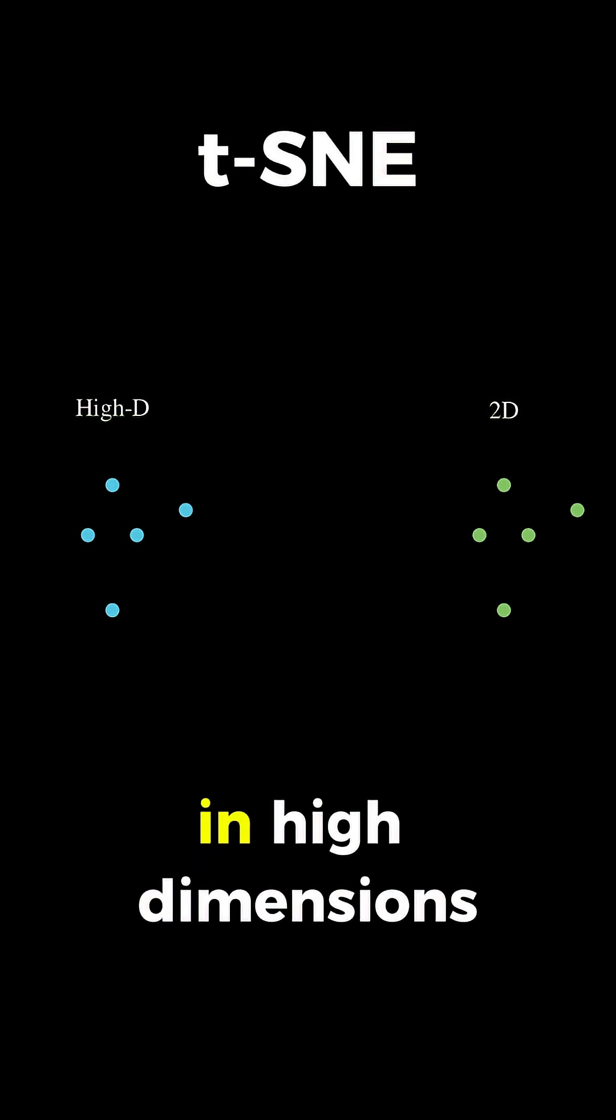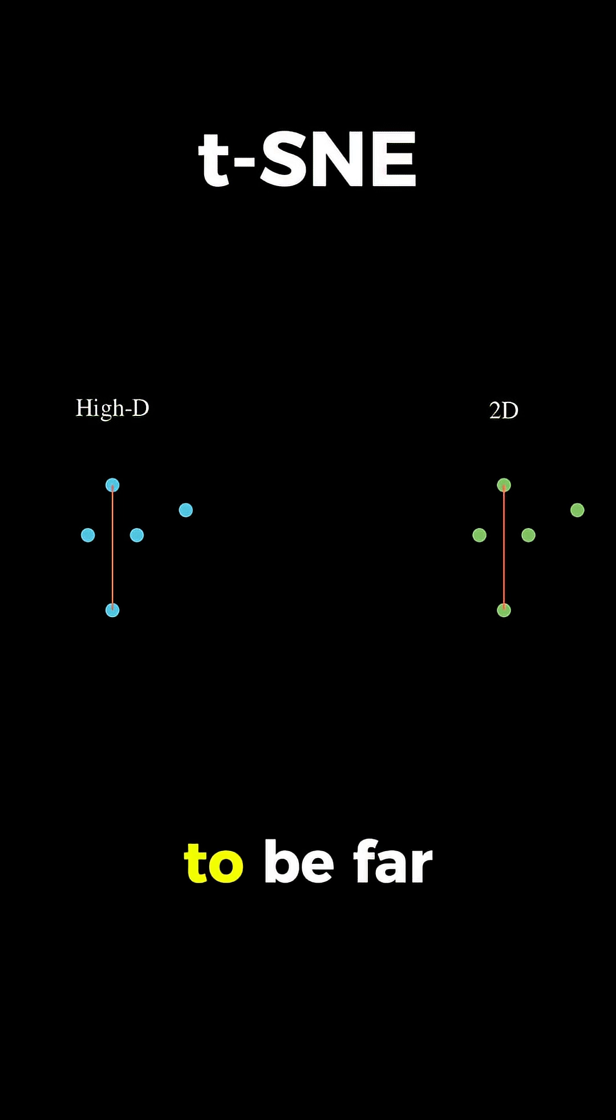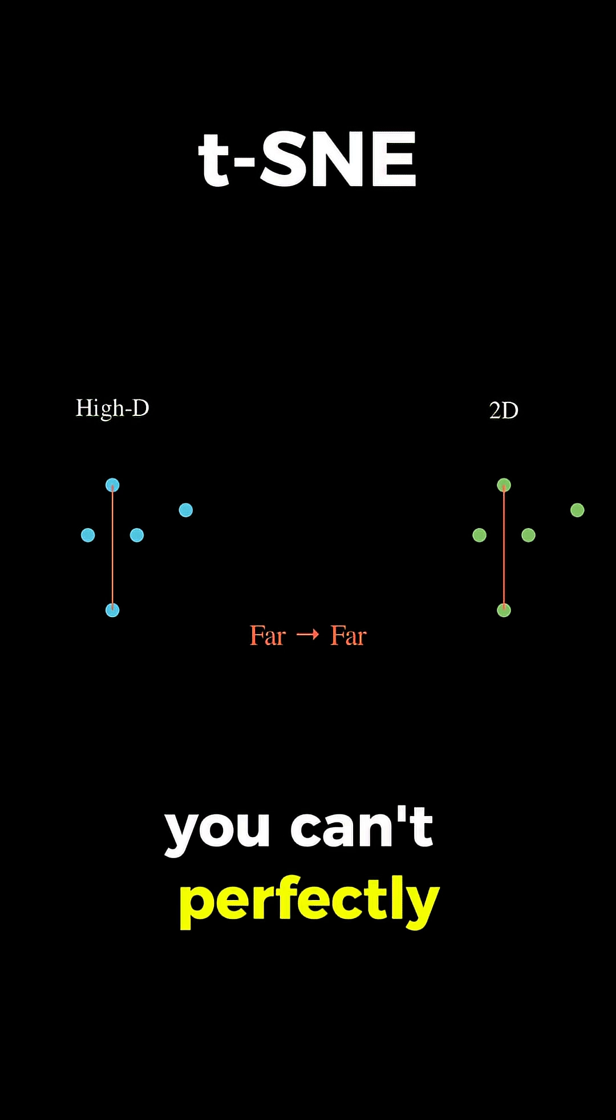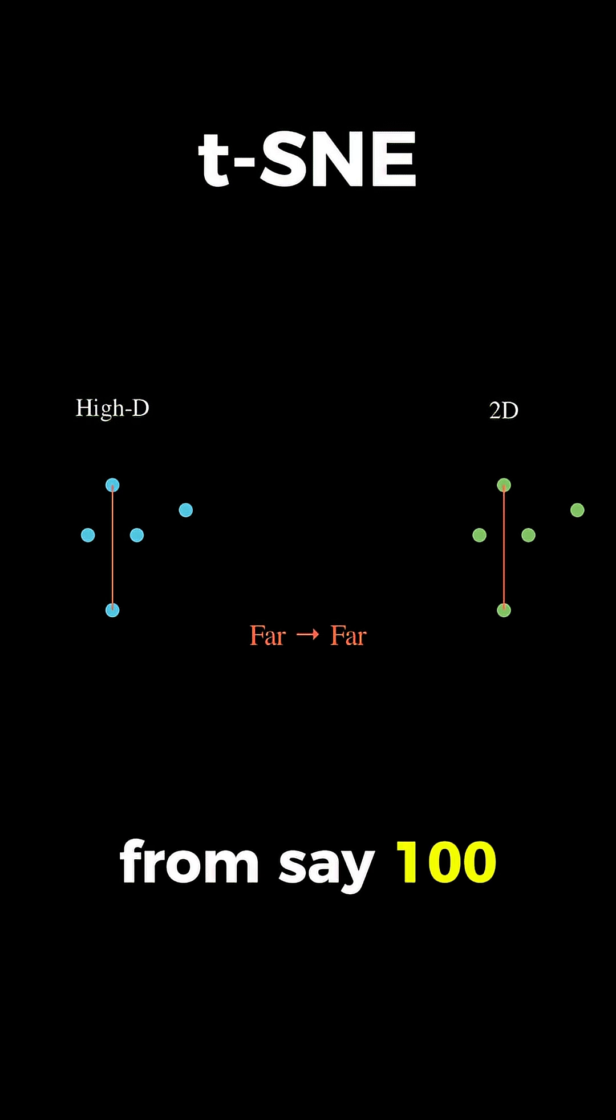And if they're far apart in high dimensions, we'd like them to be far apart in 2D as well. But here's where it gets tricky: you can't perfectly preserve all distances when you go from, say, 100 dimensions down to just two.